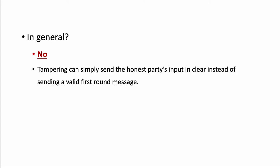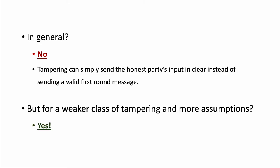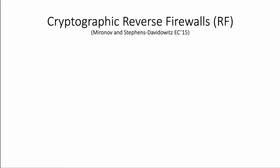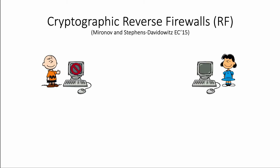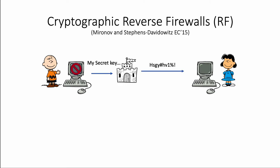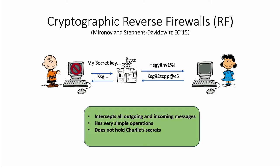In general, the answer is no. For example, consider a simple tampering that just sends the honest party's input in clear instead of sending a valid first round message. But with slightly more assumptions and a weaker class of tamperings, we can get positive results. In this work, we assume cryptographic reverse firewalls, or RF. Charlie's implementation is tampered, but now a firewall sits in between the implementation and the outside world, and its job is to sanitize all incoming and outgoing messages so that nothing important is leaked.